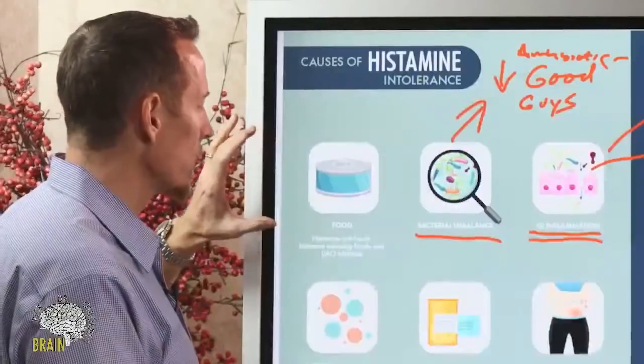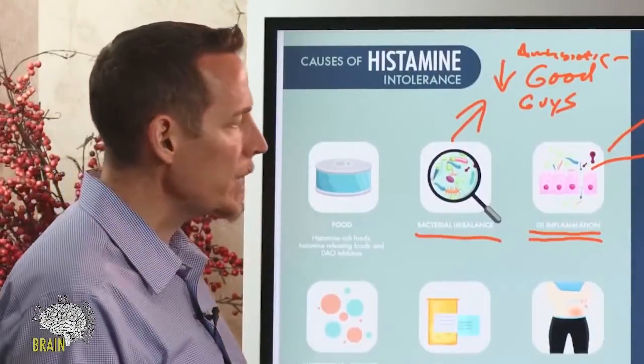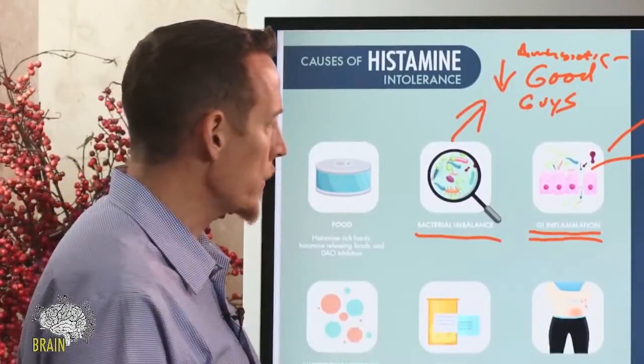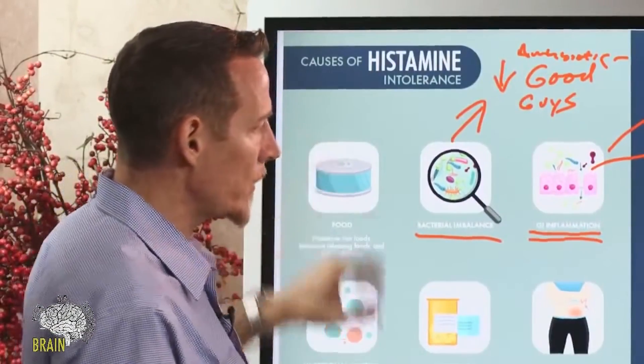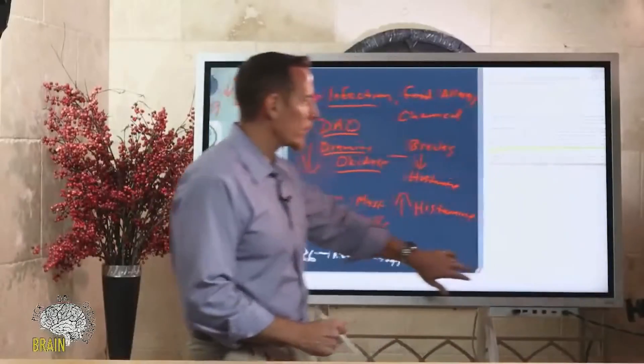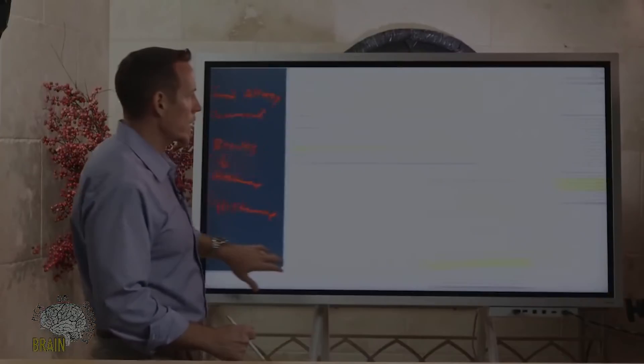Nutritional deficiencies are one of the major triggers of histamine intolerance. We also have histamine-rich foods, histamine-releasing foods, and DAO-inhibiting foods — we're going to talk about those in just a minute and I'll give you a list before we go to questions tonight. Don't forget to check out the rest of the series and make sure you hit subscribe below. Thanks for tuning in.